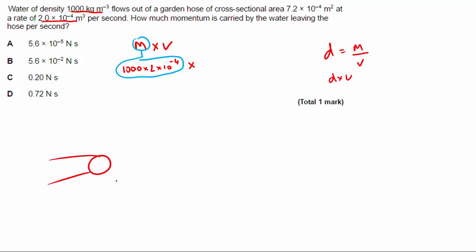And you've got a column of water coming out of it. And the column of water is going to be the same size, the same shape as the hose internally anyway. So the cross-sectional area here is going to be 7.2 times 10 to the minus 4 meters squared. And the volume of this cylinder of water that's come out is 2 times 10 to the minus 4 meters cubed.